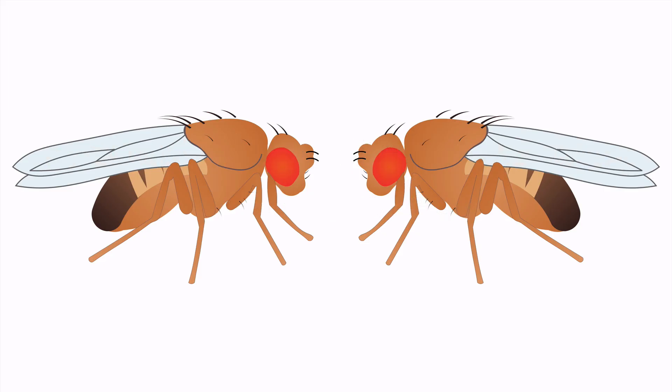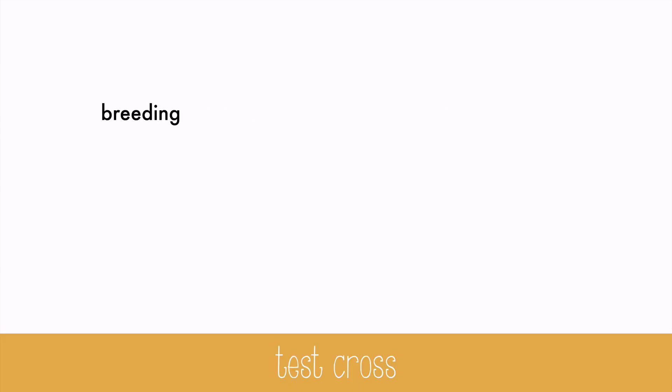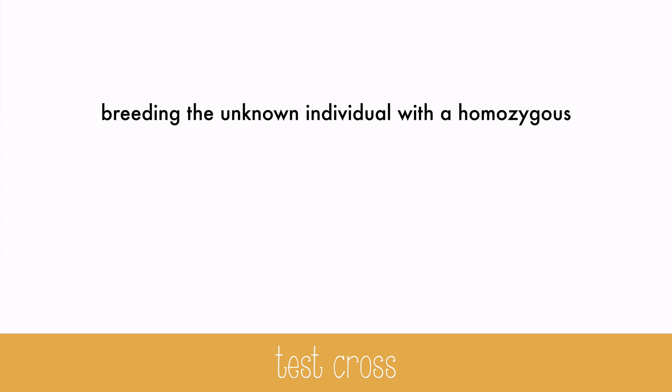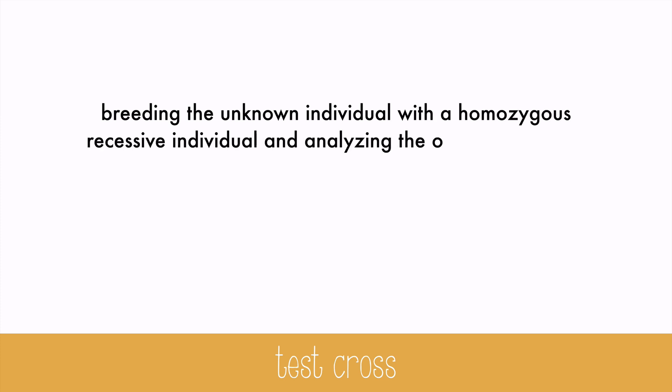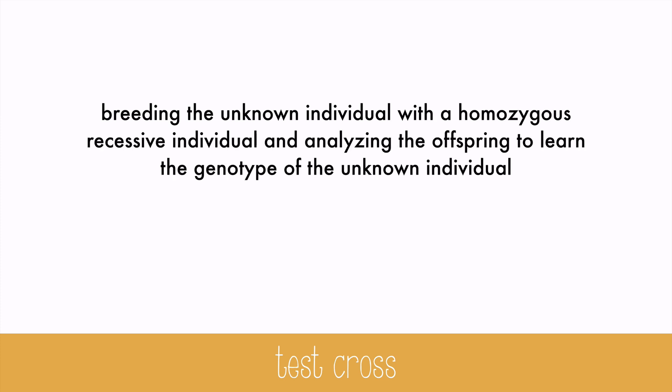You can't tell just by looking at the phenotype if the dominant trait is homozygous dominant or heterozygous. In order to find out what their genotypes are, we can do something called a test cross. During a test cross, you'll be breeding the unknown individual with the homozygous recessive individual and analyzing the offspring to learn the genotype of the unknown individual.